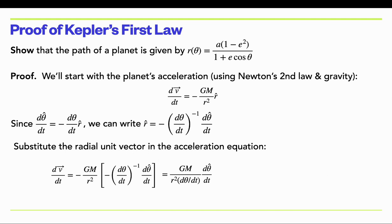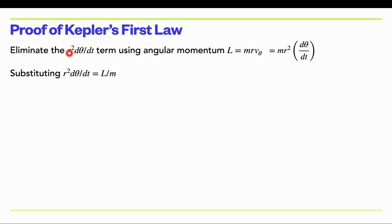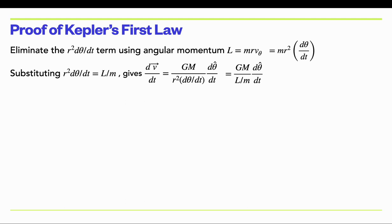We rearrange to bring the dθ/dt and r² terms together, all times dθ̂/dt. We want to write r² dθ/dt in terms of angular momentum. The angular momentum is m r v_θ, and since v_θ = r dθ/dt, that's where the r² comes from. Therefore r² dθ/dt equals the angular momentum divided by the mass of the planet, l/m. So the acceleration of the planet is GMm over angular momentum times dθ̂/dt.